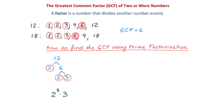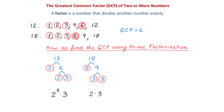If you need more practice on prime factorization, please watch one of my previous videos. Now, let's find the prime factorization for 18. 18 divided by 2 is 9, and 9 divided by 3 is 3. Then, the prime factorization for 18 is 2 times 3 squared.